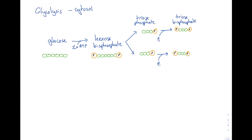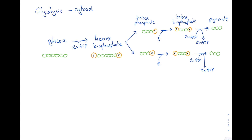Finally these phosphate groups are removed to help form ATP, leaving us with two three-carbon molecules called pyruvate. As each molecule of triose bisphosphate loses two phosphate groups, we can actually create two molecules of ATP from both of these. In addition, we are also reducing two NAD+ coenzymes — one becomes NADH and another also becomes NADH.